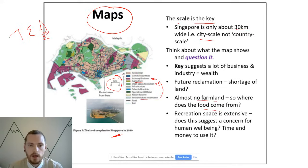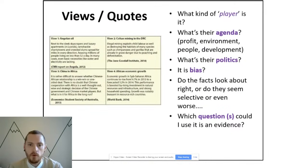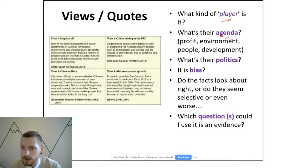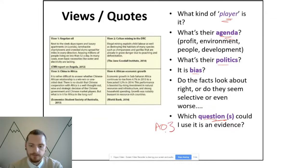When you get views or quotes, go through the process: what kind of player do I have, what's their agenda, what are their attitudes — back to PAF — what's informing their attitudes, do they have bias? Then think: which questions could I use this as AO3 evidence in? That's how you unpick quotes and views resources.